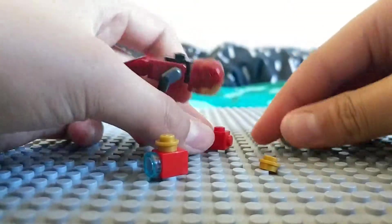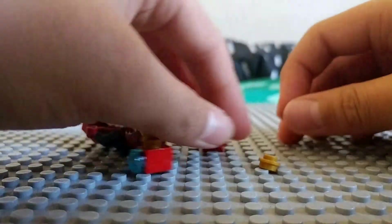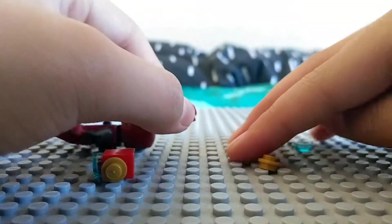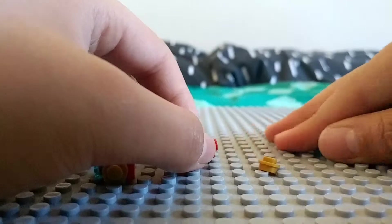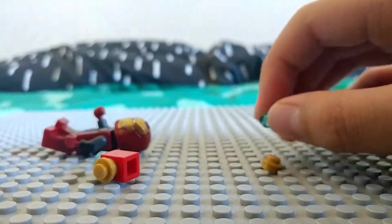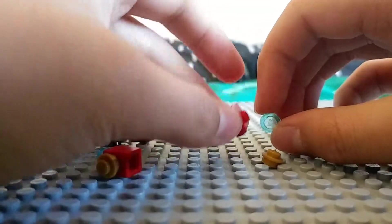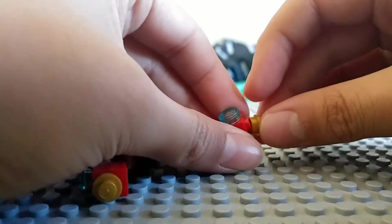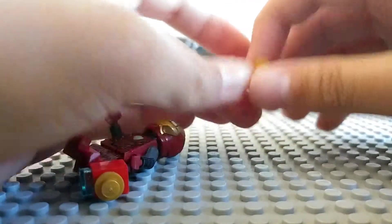So what you're gonna do is, again I don't have much burgundy so I've been using bright red, you get a round stud with no stud on it, and then you get a gold one you put on top like that.